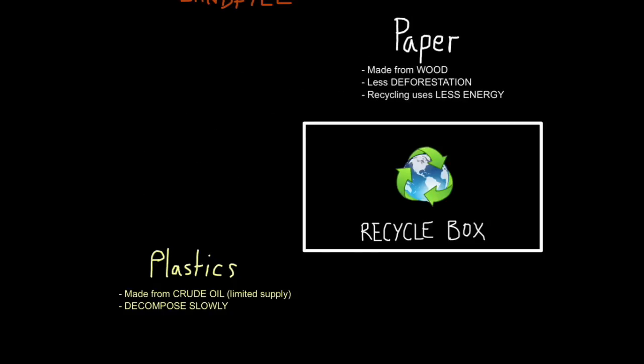Secondly, we recycle paper. Paper is made from wood. So recycling paper means less deforestation, less cutting down of trees, and that also is good for climate change because trees take in carbon dioxide when they photosynthesize, a very powerful greenhouse gas. Also, recycling of paper requires less energy than making it from scratch. So paper can go in our recycling box.